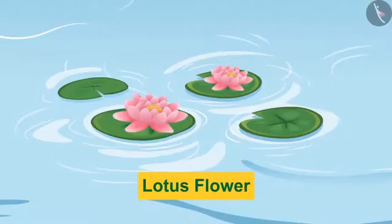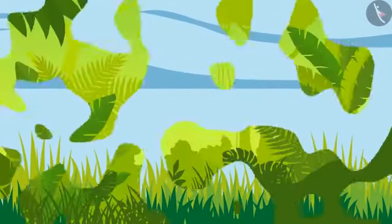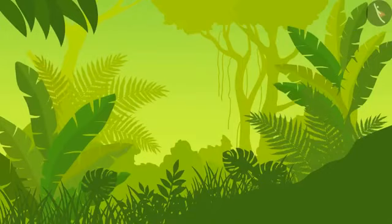Here is a lobelia flower. And here, focus on another tiny plant — grass. Of course, grass is a plant too. So, did you see? So many different plants.